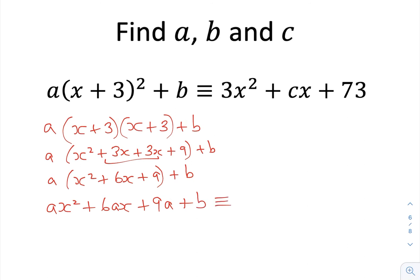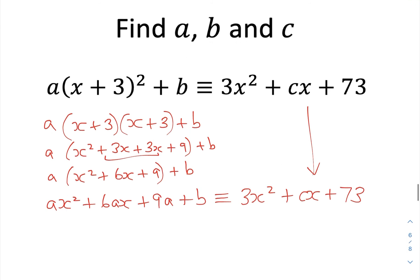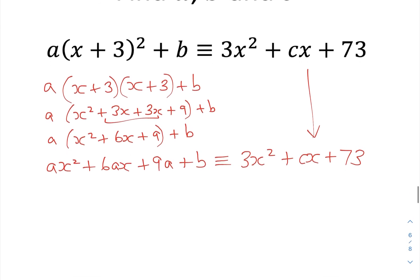So now I can, after all that, just bring my right-hand side back in as 3x squared plus cx plus 73. So hopefully we've got something now that we can start to equate, start to put together, and start to figure out the value of.